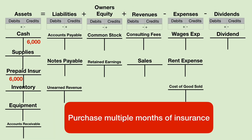Our next transaction is very similar. We're buying another asset: insurance. We're going to debit prepaid insurance because we're buying multiple months — let's say six months. Since we're buying multiple months, this will benefit our future, and the second definition of an asset is something that will benefit the future. We will credit cash because we're paying cash. If we were paying only one month of insurance, we would just debit insurance expense. But if we pay for multiple months, we debit the asset, and later I will show you how to move the prepaid insurance over to insurance expense at the end of the year.